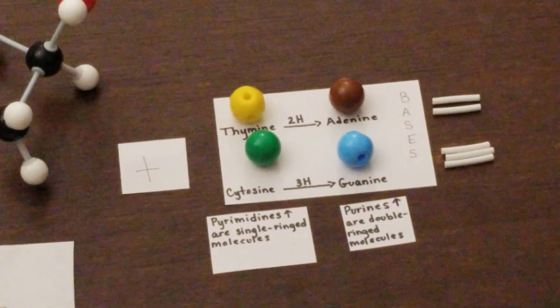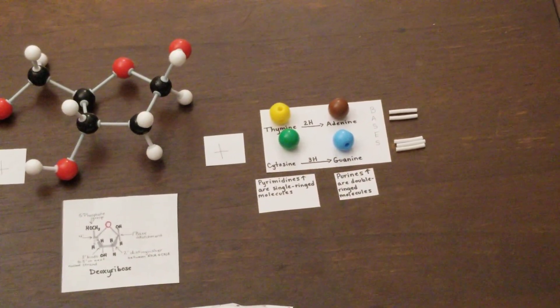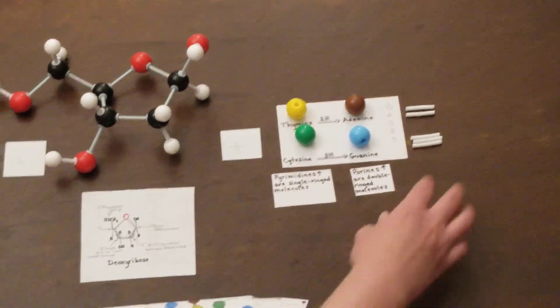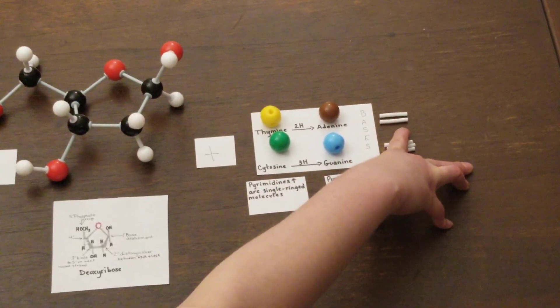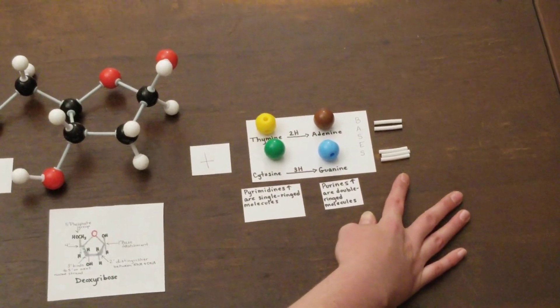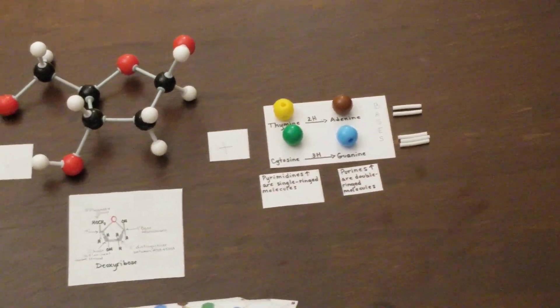Base pairing occurs between adenine and thymine in equal amounts, and cytosine and guanine in equal amounts. Two hydrogen bonds are used for thymine and adenine, where three are used for cytosine and guanine, and they lightly guide the base pairs together.